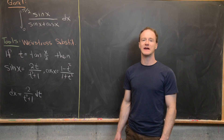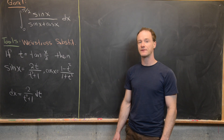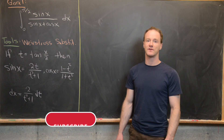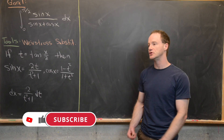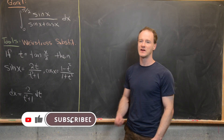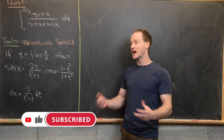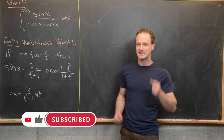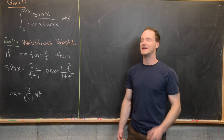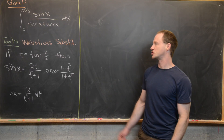Here we're going to evaluate an integral two different ways: first by something called Weierstrass substitution, which will be quite involved, and second by using symmetry and a trick, which will be nice and short.